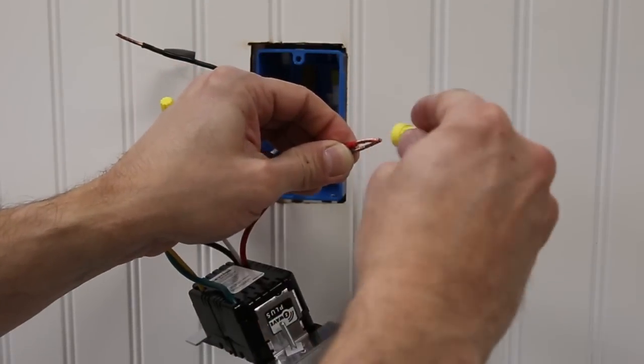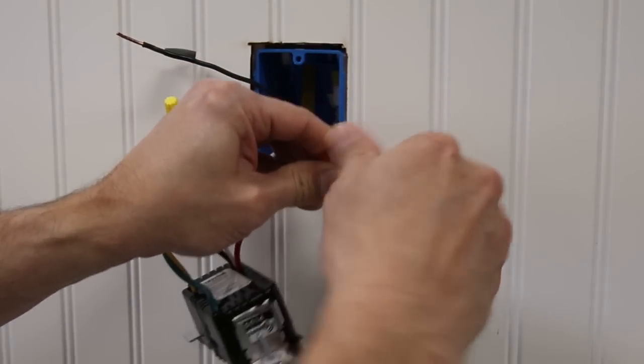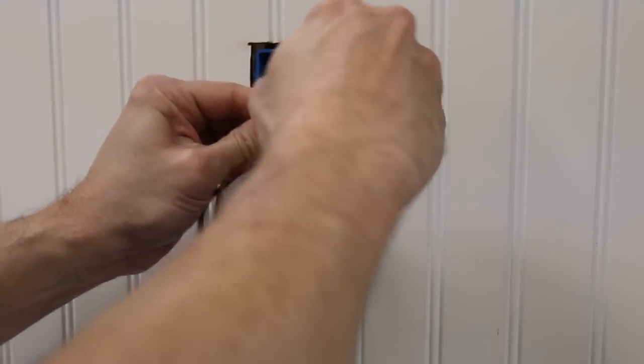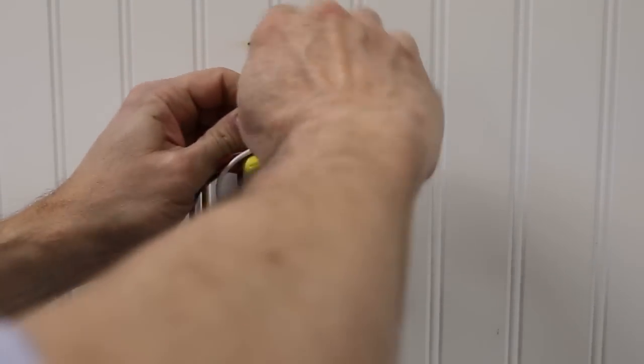Next, wire together the red lead on the device and black load wallbox wire. Finally, wire together the black lead on the device and the black hot wallbox wire.